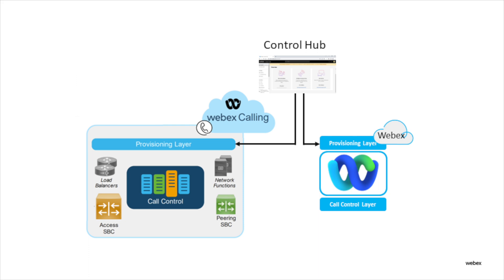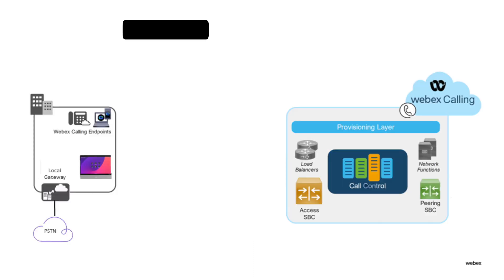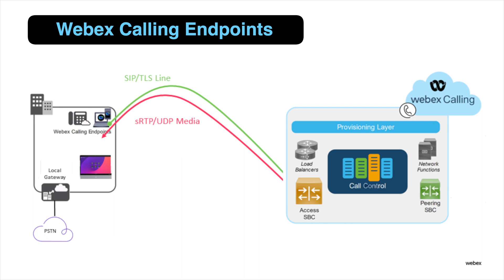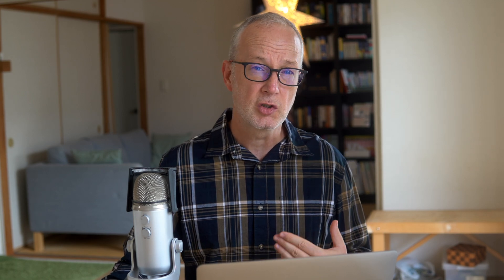There's also the WebEx backbone, which connects all of the WebEx microservices. For WebEx Calling endpoints like the MPP phone, a single connection is established for each client — that's SIP over TLS, registering to the Access SBC. The media is encrypted SRTP over UDP. If you're using the local gateway PSTN option, that'll be one more connection for the gateway — a SIP over TLS trunk, still using SRTP over UDP for the media.